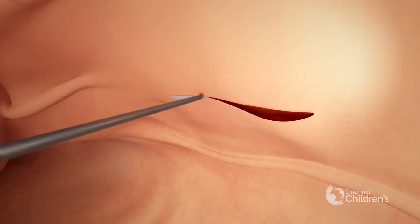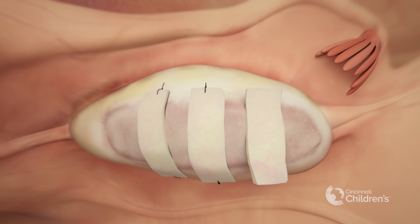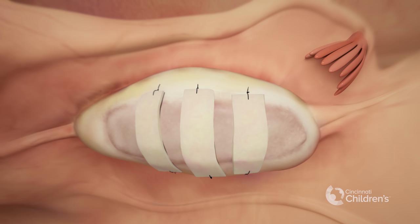Another technique involves placing the ovarian tissue strips directly on the remaining ovary and suturing the tissue in place. The size of the ovary will determine the number of strips that can be placed using this technique.